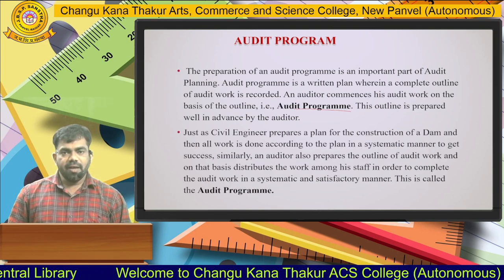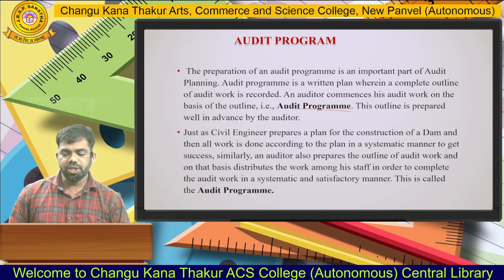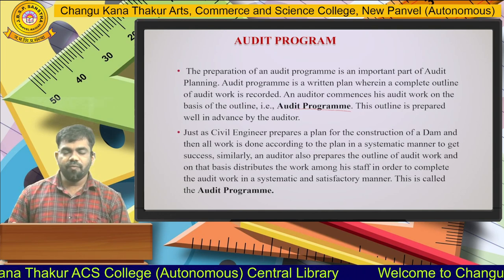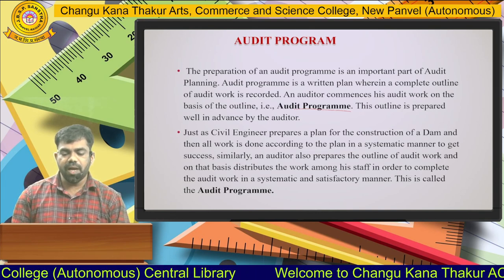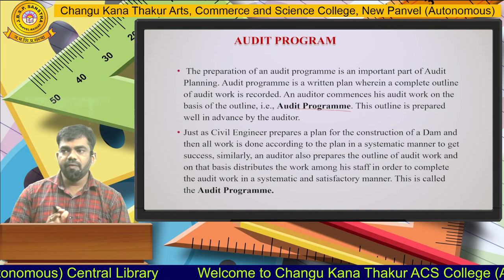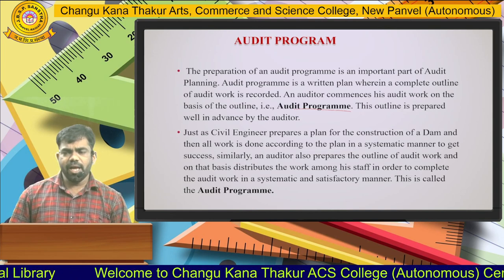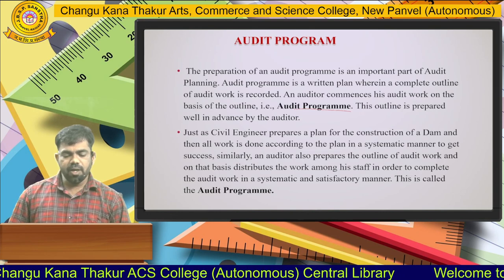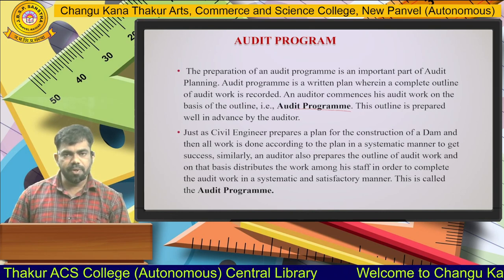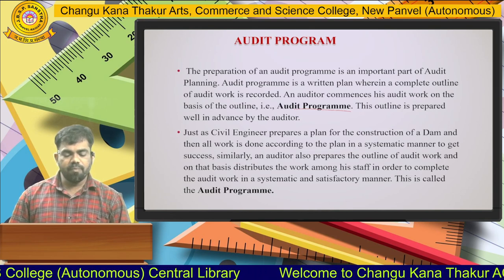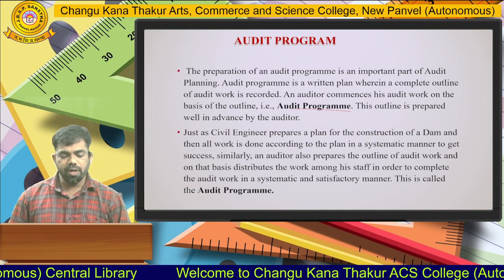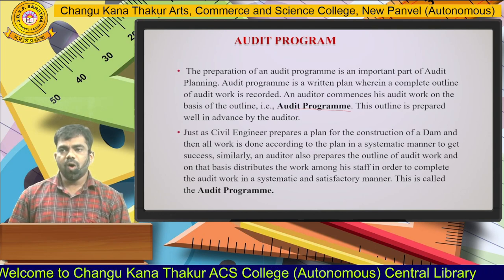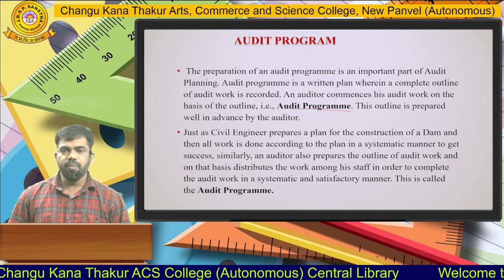Just like a civil engineer prepares a plan before construction of a dam — he does not start construction directly — the civil engineer prepares a plan and program, and divides the work among the workforce according to their talent and skills. Similarly, an auditor prepares an outline of audit work and distributes it among his staff to complete the audit in a systematic and satisfactory manner. In simple words, the audit program is the division of work before the auditing process starts.